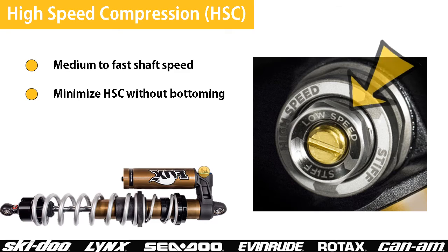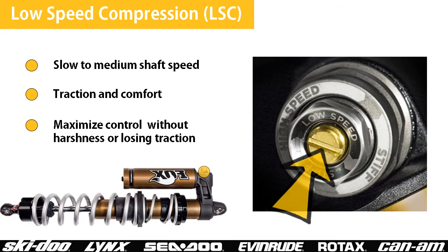The high speed compression adjuster affects the compression damping during medium to fast shock shaft movements. The goal is to set the suspension to have as little high speed compression damping as possible without bottoming out. Low speed compression primarily affects the compression damping during slow suspension movements. It also affects traction and the ride comfort of the vehicle.